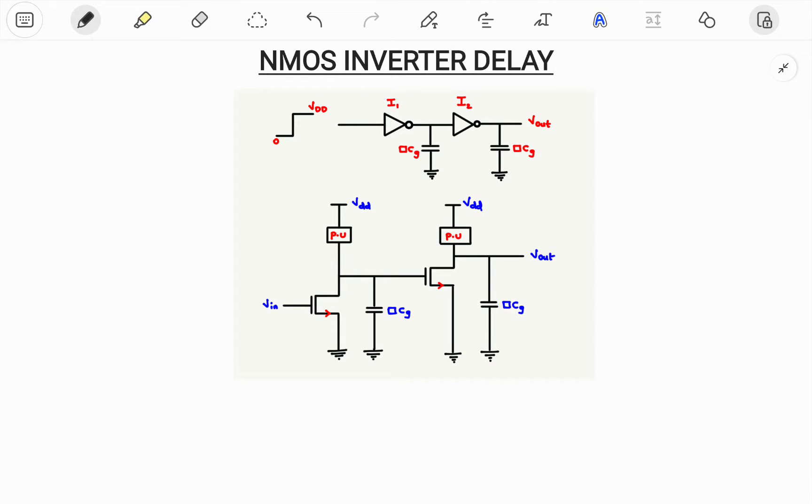In this video let us try to understand the working of NMOS inverter delay. This is the diagram for this particular NMOS inverter delay where two NOT gates are connected back to back and here this square CG indicates load.